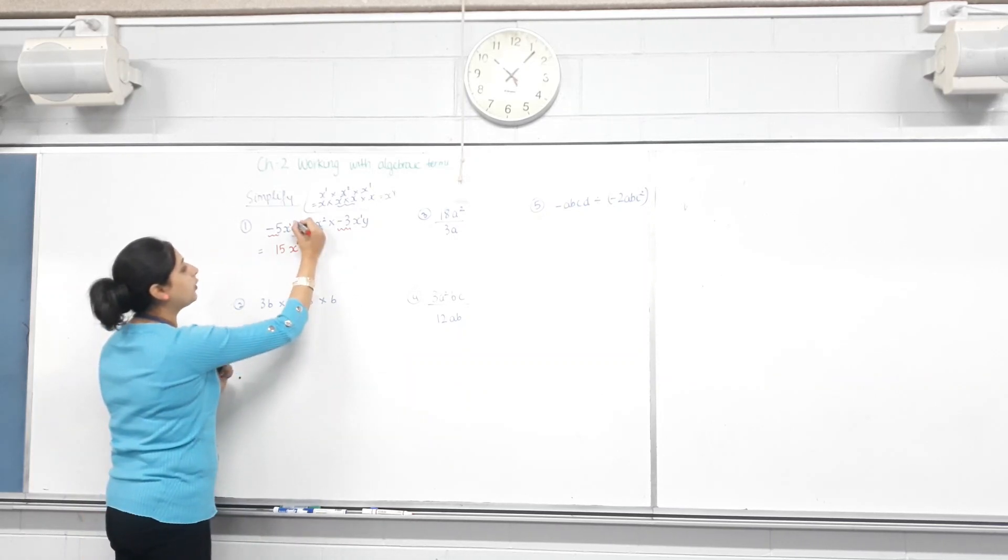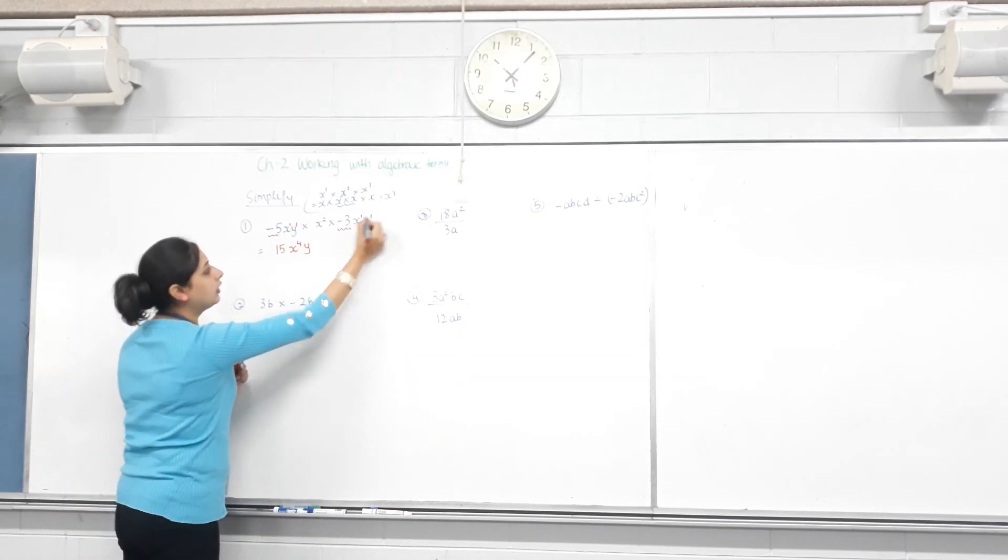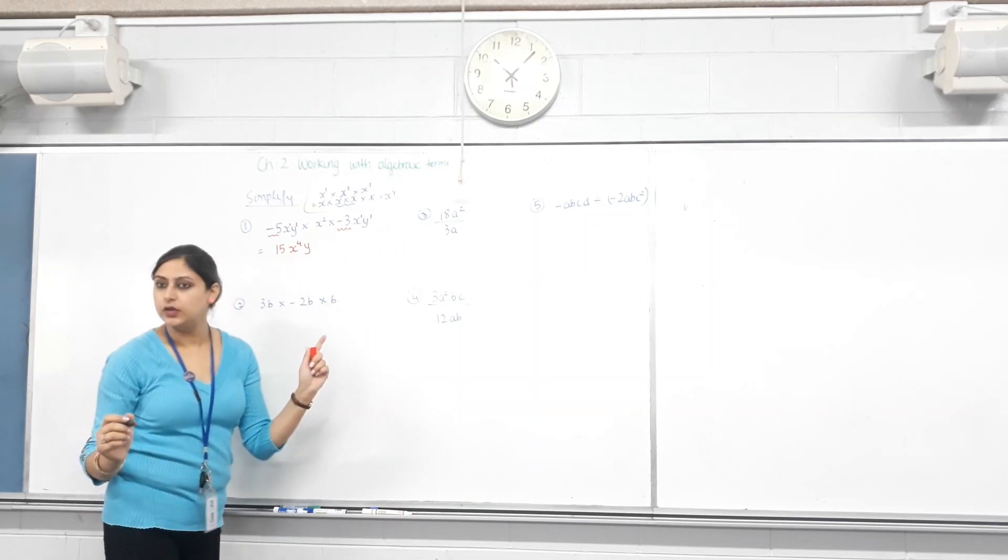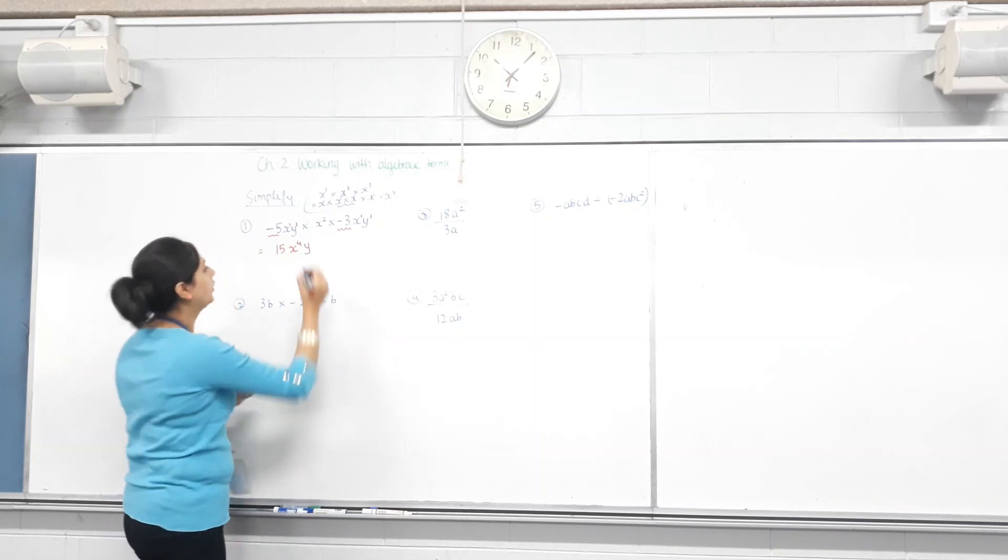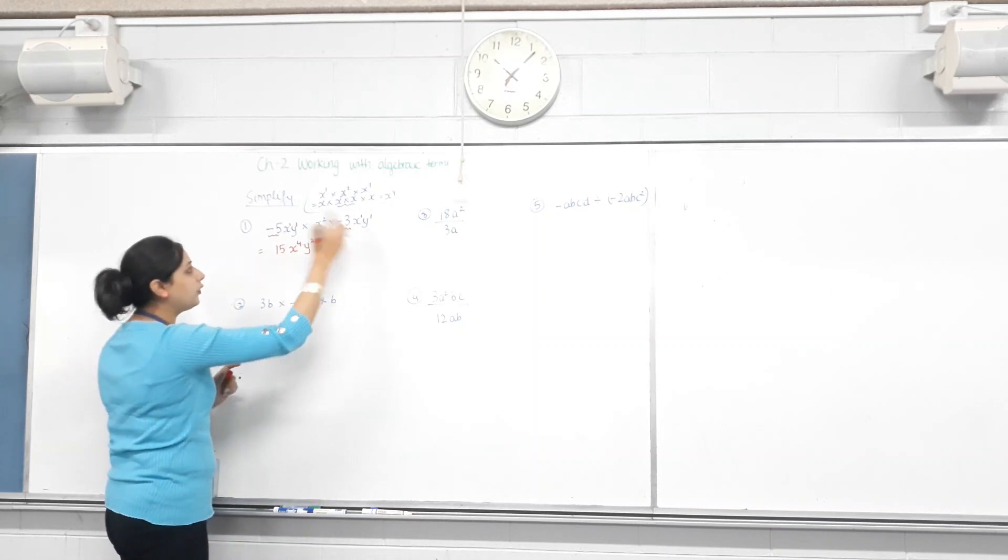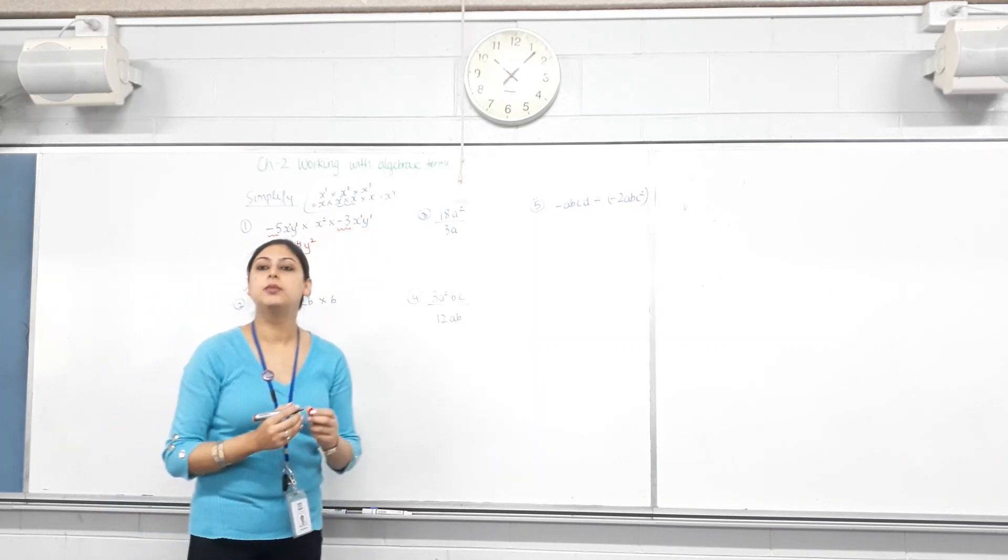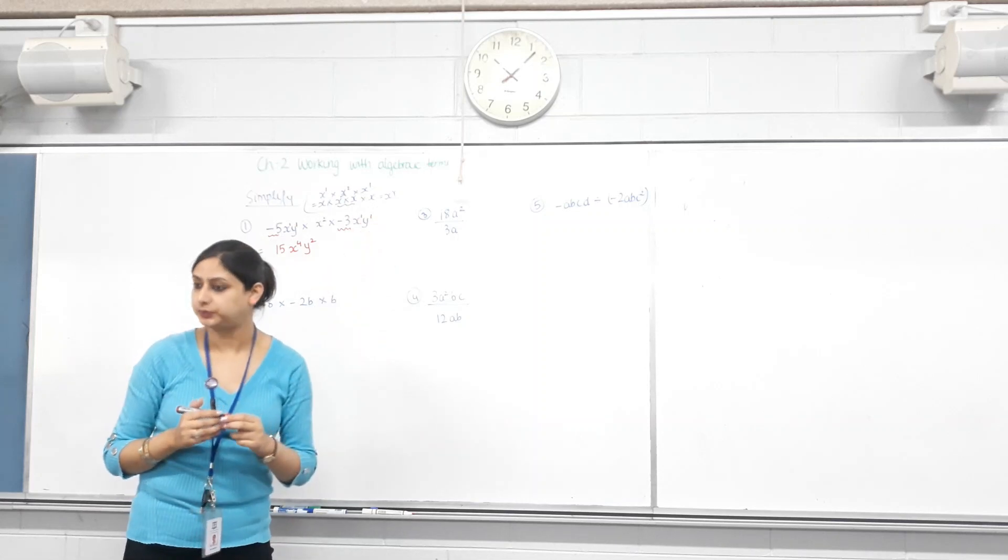Same with Y. What's the power of Y? One. Here? One. Are they being multiplied? So, how many do we have? Two. One plus one is two. So, you can either count how many you have, or you can add the powers. Same thing. But do you understand where it comes from?